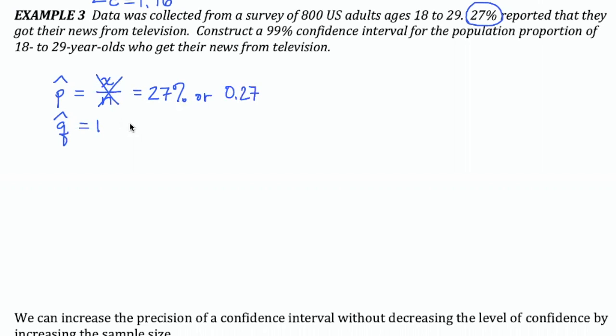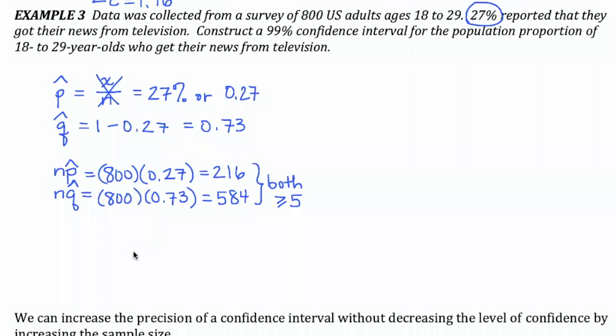Now before going any further, I'm going to check what I get for n times p-hat and n times q-hat. Both of my calculations are in fact bigger than or equal to 5, so I can approximate my binomial probability distribution with a normal probability distribution. My confidence level that I'm looking for is 99%, and the critical z-score was 2.575.